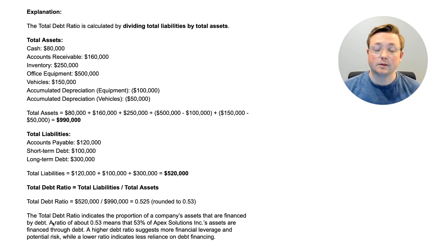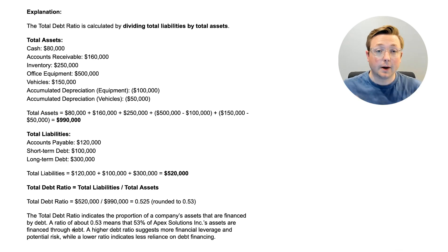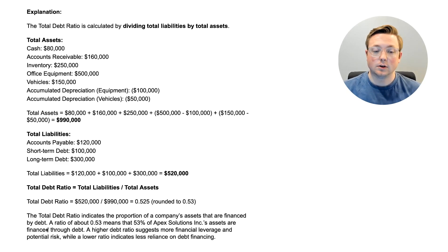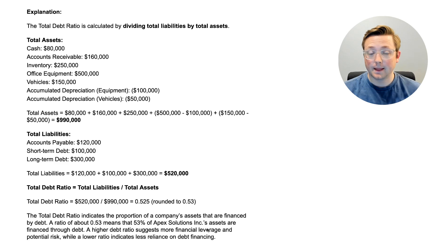What does the total debt ratio mean? The total debt ratio indicates the proportion of a company's assets that are financed by debt. Previously with the other ratio, we were comparing equity and debt financing, but now we're just seeing how much of our assets are financed by debt. A ratio of about 0.53 means that 53% of Apex Solutions Inc.'s assets are financed through debt. A higher debt ratio suggests more financial leverage and potential risk, while a lower ratio indicates less reliance on debt financing.